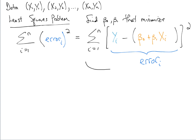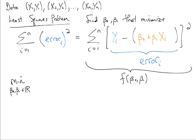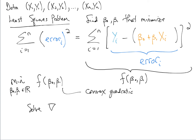Defining f(beta_0, beta_1) as that sum of squared errors, our optimization problem is to minimize f over all real beta_0 and beta_1. Because f is a convex quadratic function, the first-order conditions are necessary and sufficient. So we solve the gradient of f equal to zero to find the minimizers, which we call beta_0 hat and beta_1 hat — the values affiliated with the fitted value y hat.